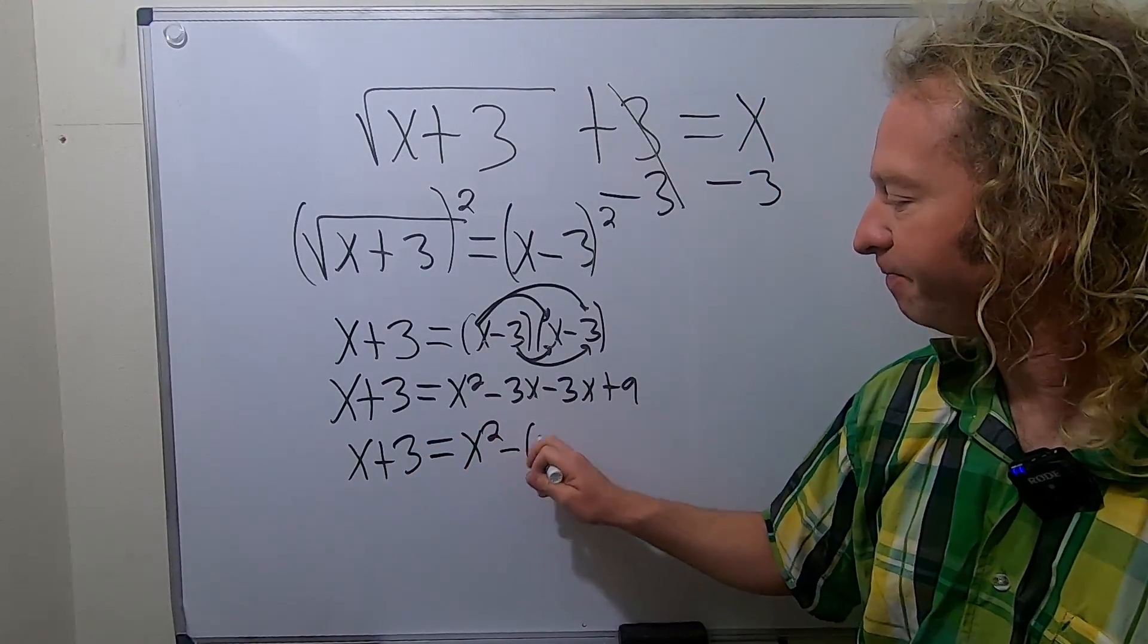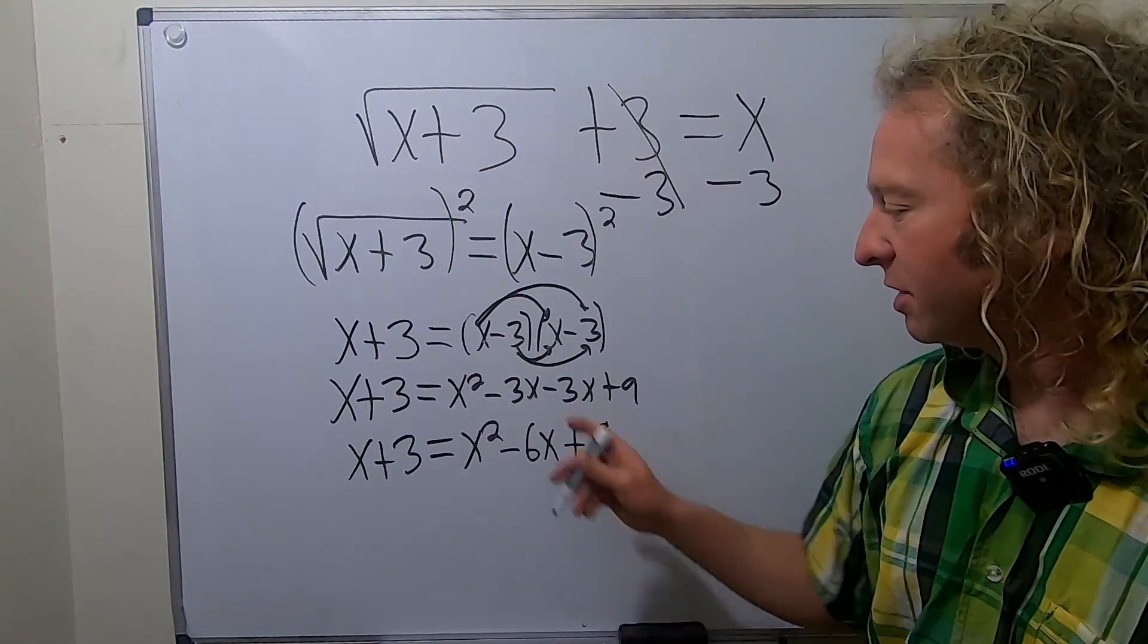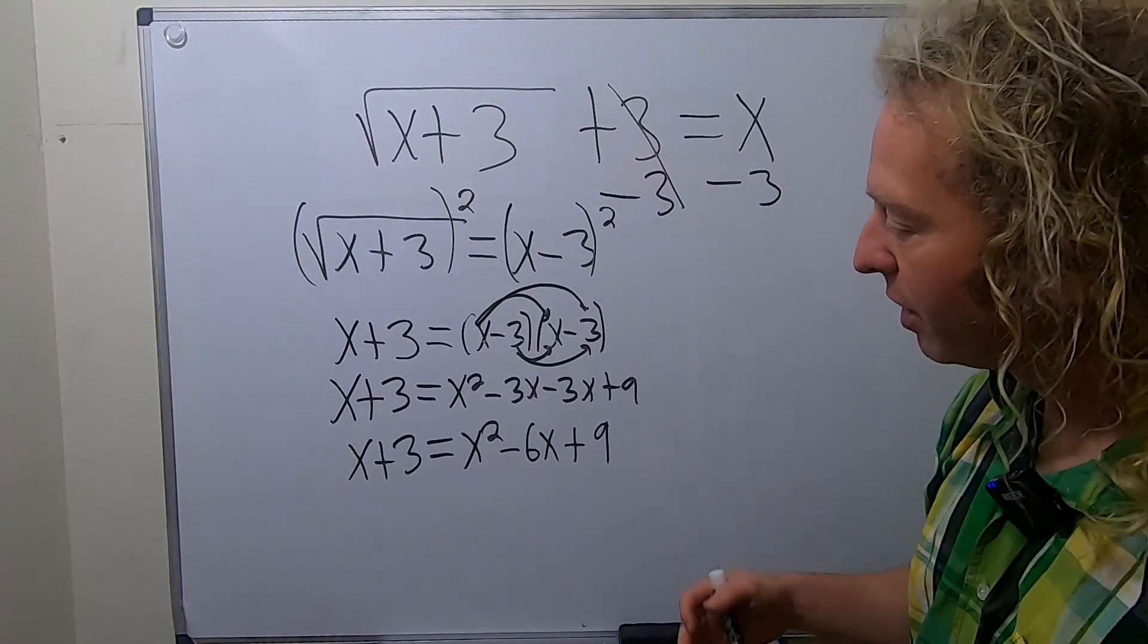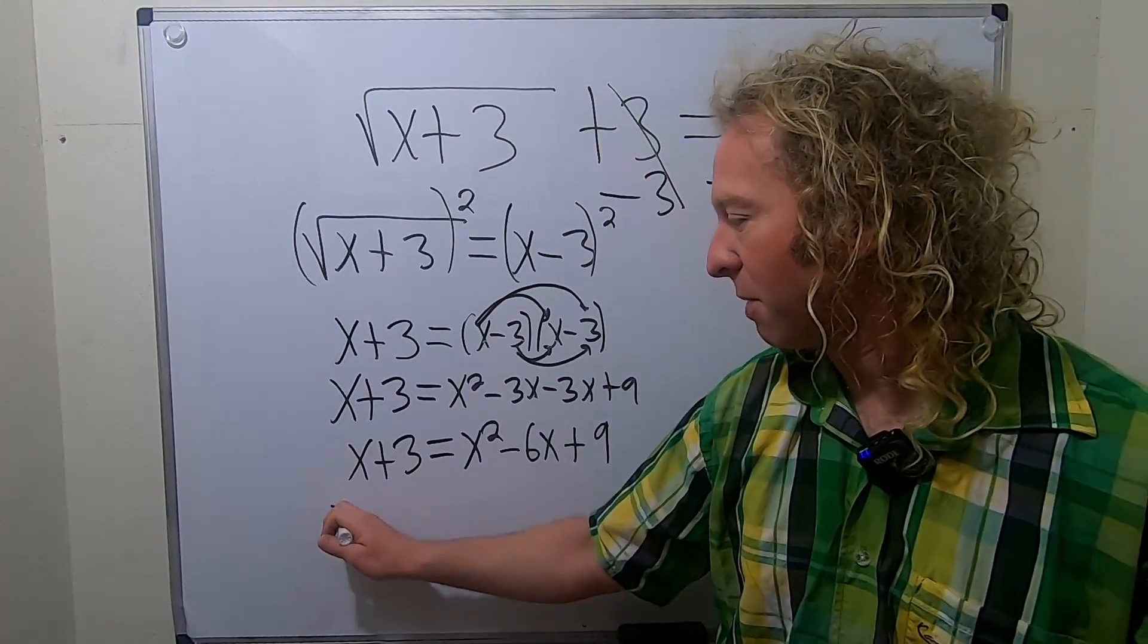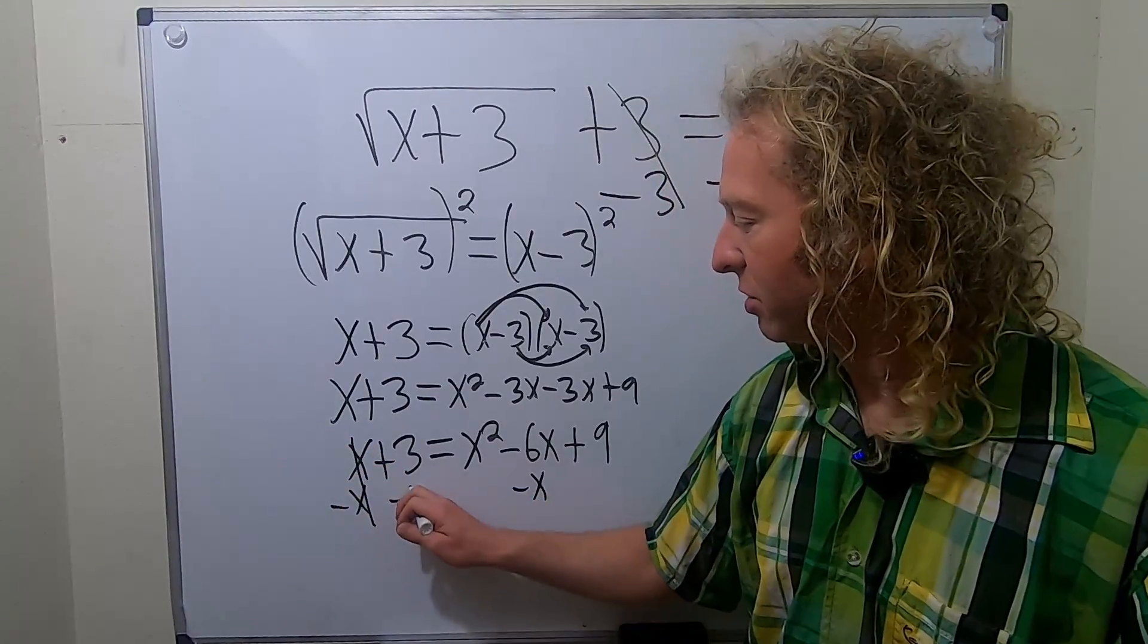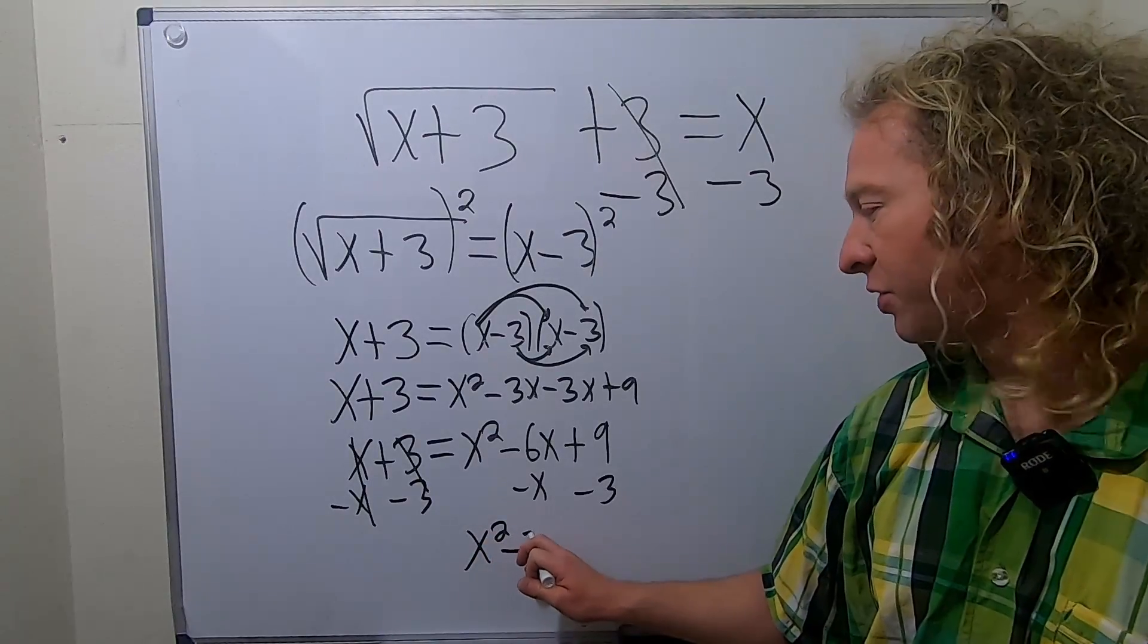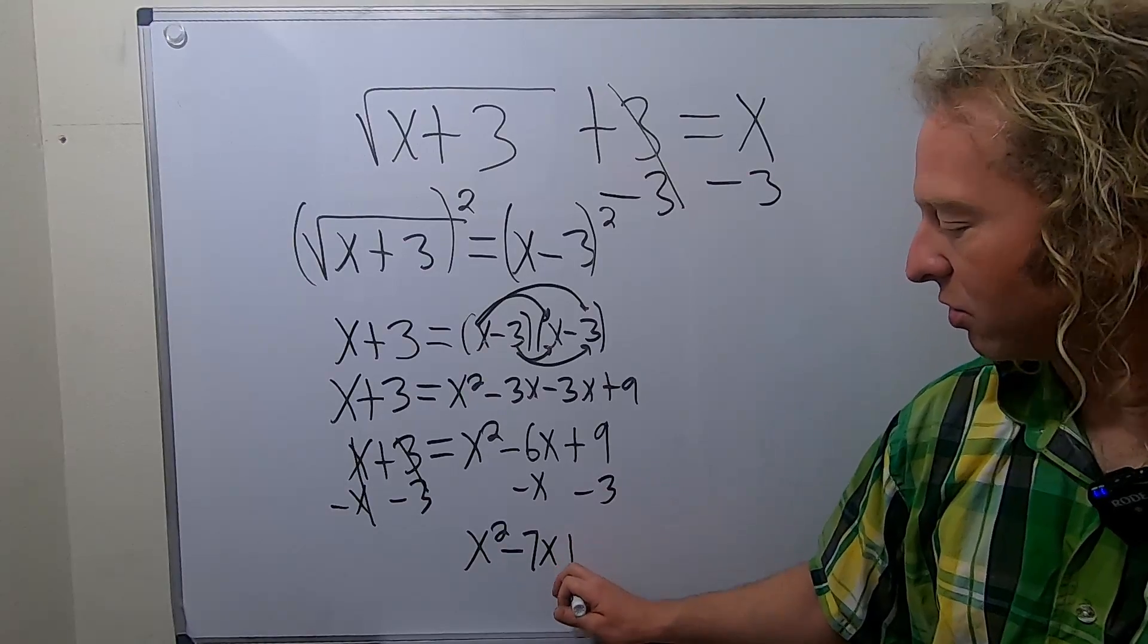This is a quadratic equation, so ideally we want to set it equal to 0. Maybe we'll start by subtracting x and subtracting 3, so minus x minus x. I'm going to line them up so it's a little more clear. Minus 3, minus 3. This will be x squared minus 7x - negative 6x minus x is 7x - 9 minus 3 is going to be positive 6, and this is equal to 0.